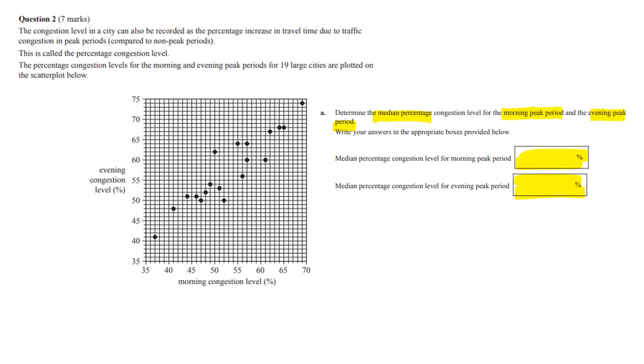Now a lot of people struggled to get the second value, the evening, because they made a very basic error. If you're looking at the morning, it's about the left-right values for morning, and if we're looking at evening, it is the up-down.